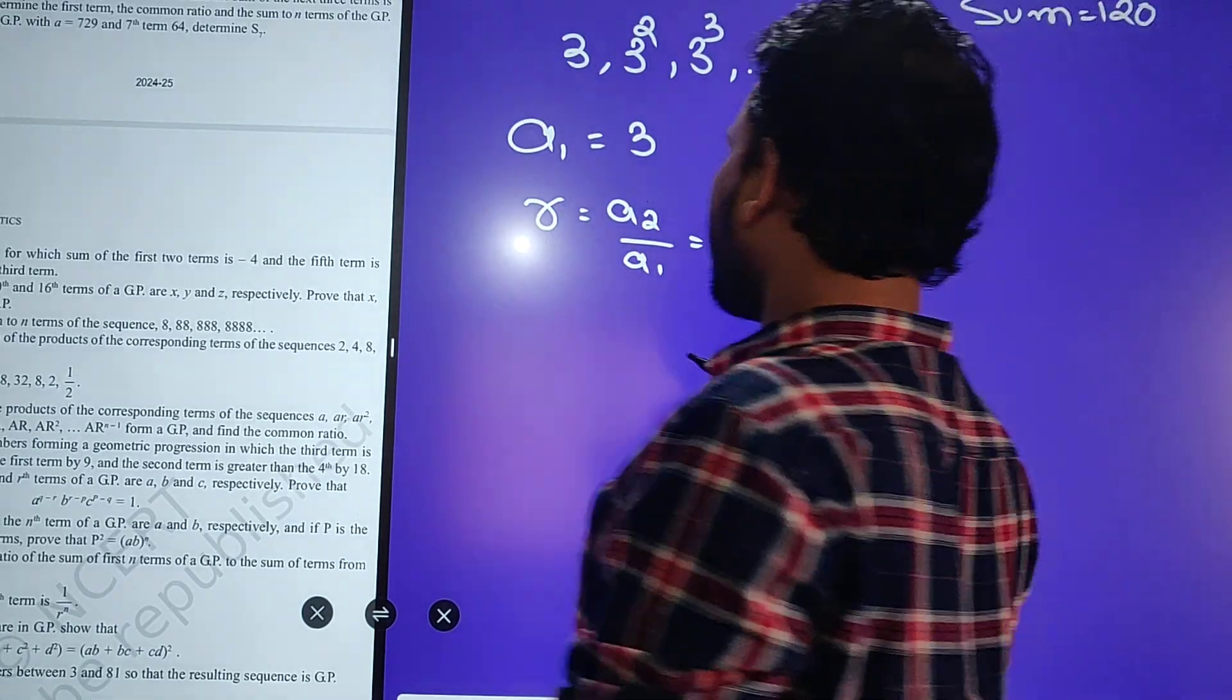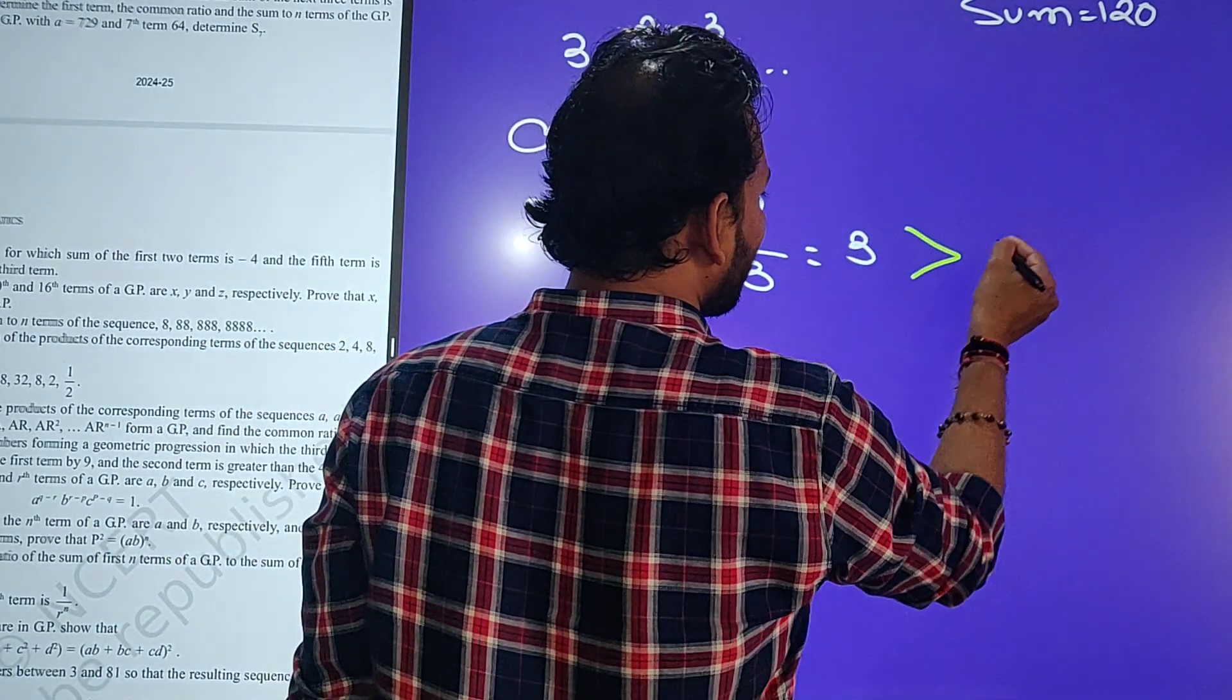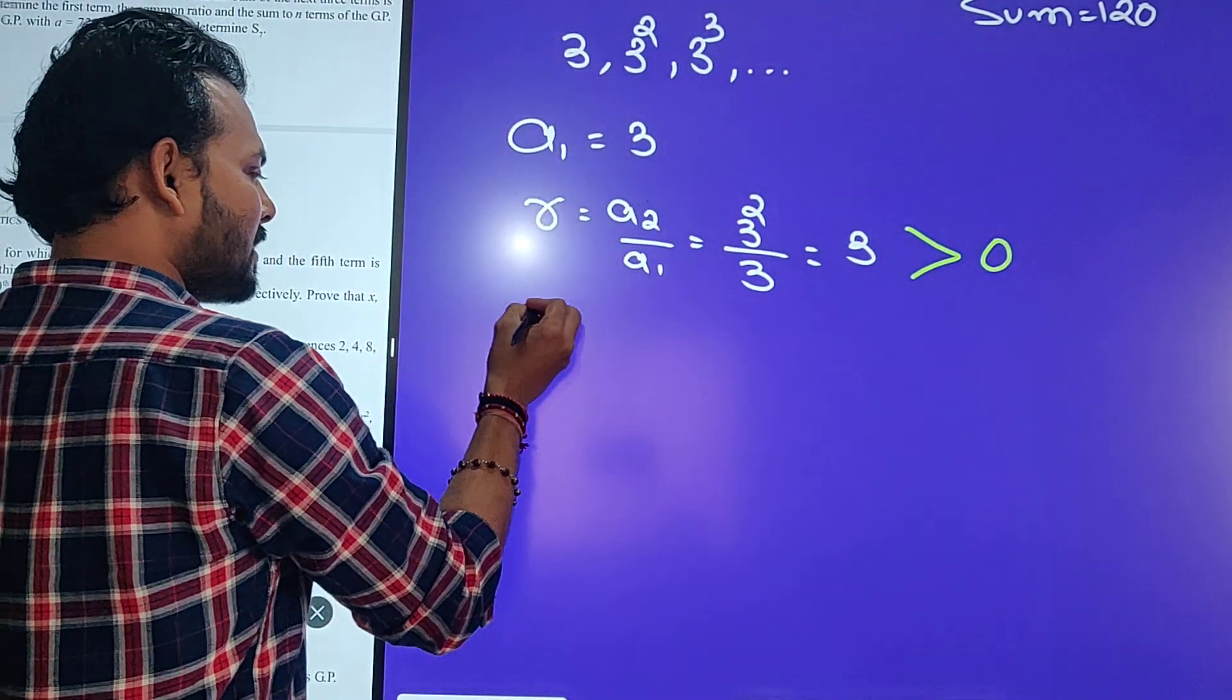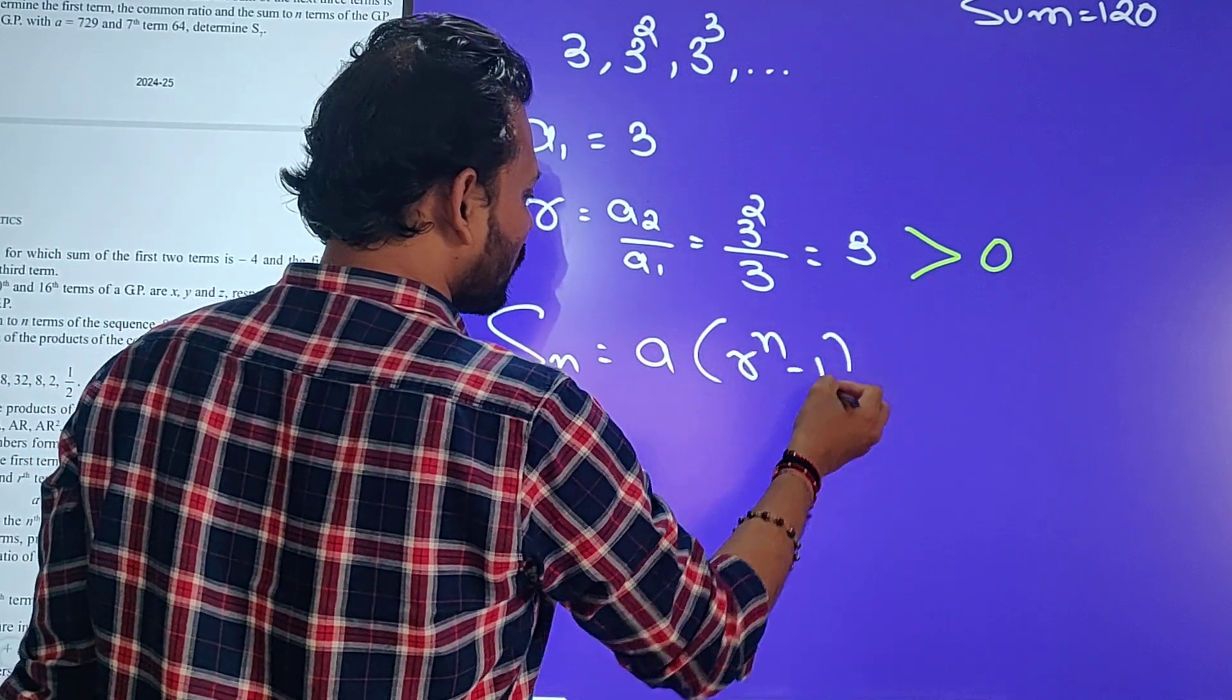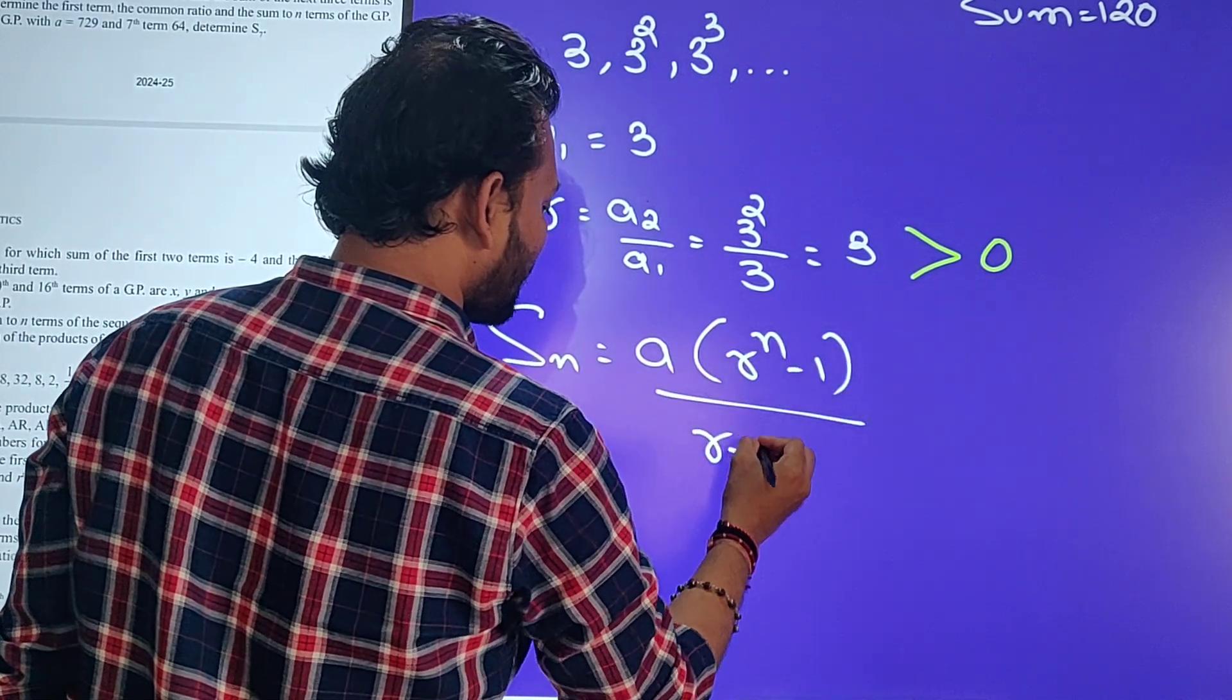So humara Sn ka formula, r kitna hai? Greater than zero hai. So humara Sn ka formula kya hai? Sn ka formula hai, a r raise to n minus 1 upon r minus 1.